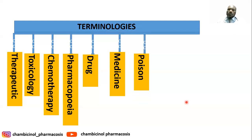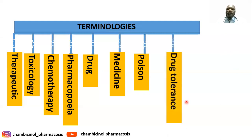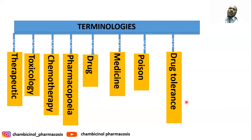We also have poison — any substance which, when consumed by a living organism, can induce illness or death. We also have drug tolerance, which is a person's diminished response to a drug that occurs when the drug is taken repeatedly, and the body adapts to the presence of the drug and no longer responds to it.